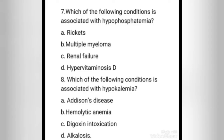Next question: which of the following conditions is associated with hypophosphatemia? Options: rickets, multiple myeloma, renal failure, or hypervitaminosis D. The right answer is option A, rickets. Rickets can result from dietary phosphate deficiency, vitamin D deficiency, or an inherited disorder of either vitamin D or phosphorus metabolism. Vitamin D-dependent rickets can be reversed by mega doses of vitamin D.